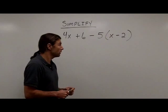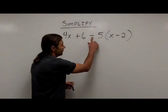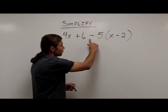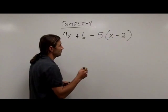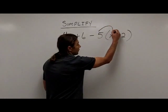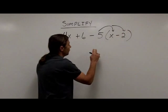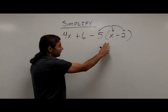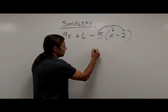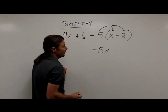So step 1 is to distribute, and in this case, notice that 5 is a negative 5. So I'm going to distribute this negative 5 to these two terms in the parentheses. So first I take the negative 5 times the positive x, which is going to give me negative 5x.